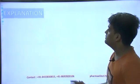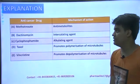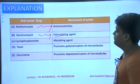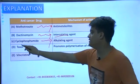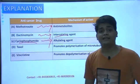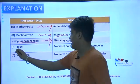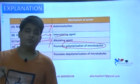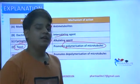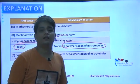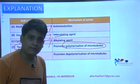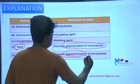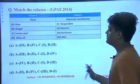Now for the explanation: the drug in option A is an anti-metabolite. We saw dactinomycin is an intercalating agent. Cyclophosphamide is an alkylating agent — not only cyclophosphamide but other drugs which are also alkylating agents. Taxol — paclitaxel and related drugs — promote polymerization of microtubules. Lastly, vinca alkaloids: vincristine promotes depolymerization of microtubules. There is a dedicated video on vinca alkaloids on this channel covering everything about vincristine, vinblastine, and whether they are indole alkaloids.